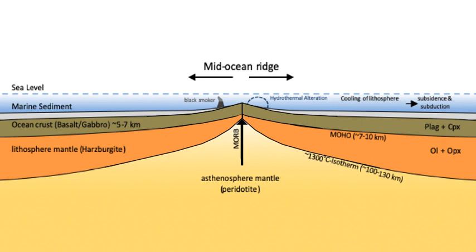At faster spreading rates the axes often display overlapping spreading centers that lack connecting transform faults. The depth of the axis varies in a systematic way, with shallower depths midway between offsets such as transform faults and overlapping spreading centers dividing the axis into segments—believed due to variations in magma supply to the spreading center. The depth of the seafloor on a mid-ocean ridge is closely correlated with the age of the lithosphere. The age-depth relation can be modeled by the cooling of a lithosphere plate or mantle half-space in areas without significant subduction.